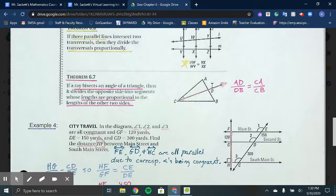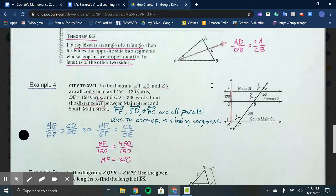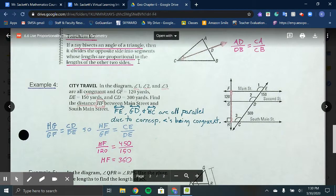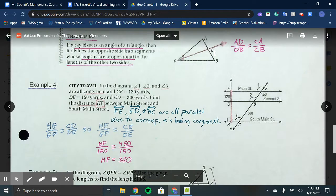Then in Theorem 6.7, if a ray bisects an angle of the triangle, like ray CD, then it divides the opposite side into segments whose lengths are proportional to the lengths of the other two sides. So segment AD and DB would be proportional to CA and CB.